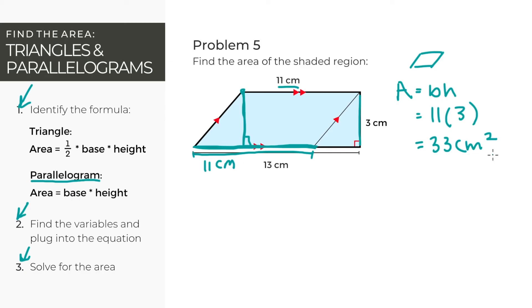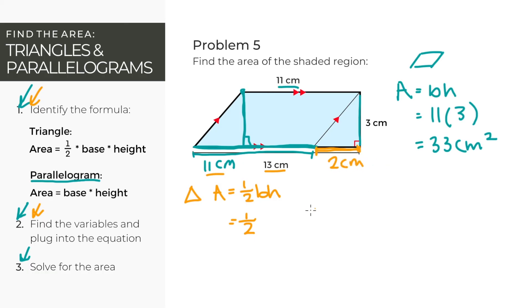Don't forget that was just the area of the parallelogram — we still have to find the area of the triangle. The area of a triangle is 1 half base times height. The base of our triangle: if the entire line is 13 and the parallelogram part is 11, then the base of the triangle must be 13 minus 11, which is 2 centimeters. The height is given to us directly, which is 3 centimeters. So solving the equation, the area of the triangle part is 1 half times 2 centimeters times 3 centimeters, giving us 3 centimeters squared.